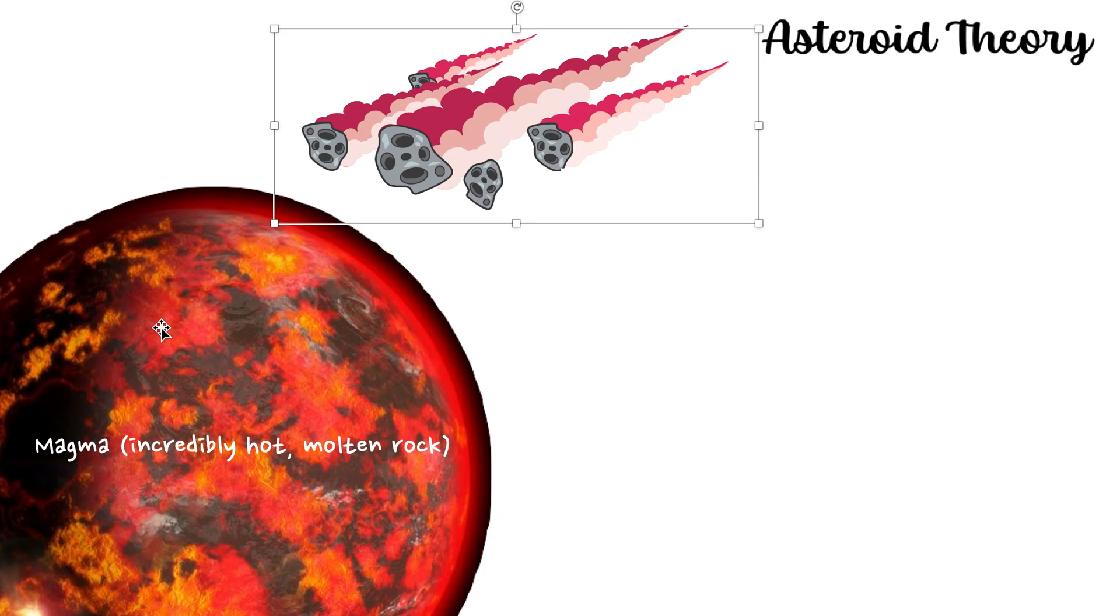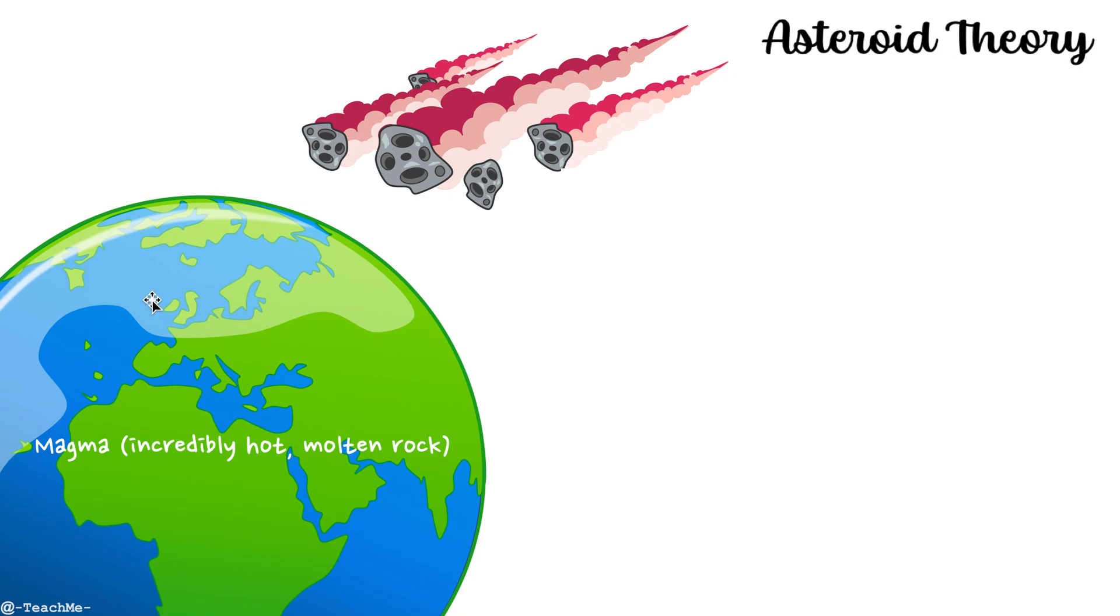So over a very long period of time, this planet became permanently cooler. When it reached this point of being cool enough, it was able to actually retain the water. It was actually able for the water to stay on this planet. And this water eventually accumulated and accumulated until it looked something like this, our actual Earth.